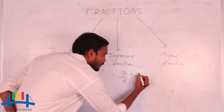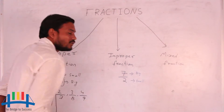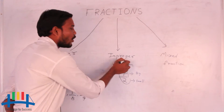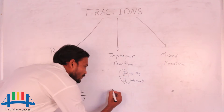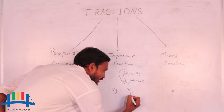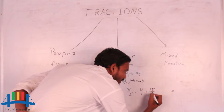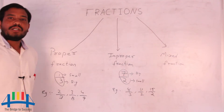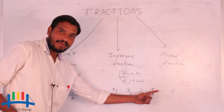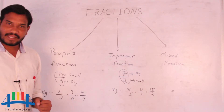In an improper fraction, the numerator will be big and the denominator will be small. Observe: 7 is big when compared to the denominator 2, so we call 7 by 2 an improper fraction. Examples for improper fractions are 8 by 3, 11 by 2, and 15 by 2. All the numerators are big and all the denominators are small, so all these fractions belong to the improper fraction.